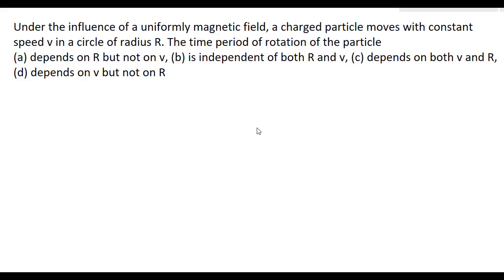Under the influence of a uniformly magnetic field, a charged particle moves with constant speed v in a circle of radius R. The time period of rotation of the particle, and there are four options.